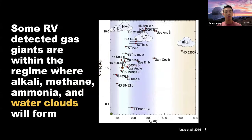Within the regime of RV-detected temperate giant planets, there are different types of clouds that actually form, affecting the spectral features. Here I'm showing a diagram of the mass of these giant planets versus their effective temperature. As you go from different temperature ranges, you can have alkali, water, ammonia, and methane clouds forming in the atmospheres of these objects.